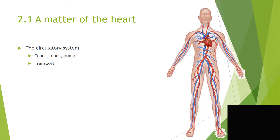The circulatory system consists of tubes or pipes and a pump. Its purpose is to transport blood through the body. This blood contains substances such as oxygen from the lungs, nutrients — that is food from your intestines — hormones, and water. All of these substances must go to your cells.